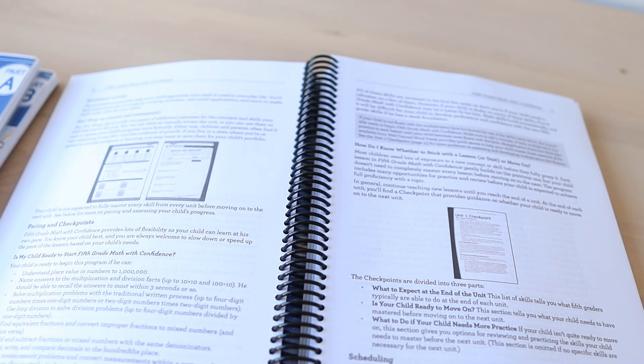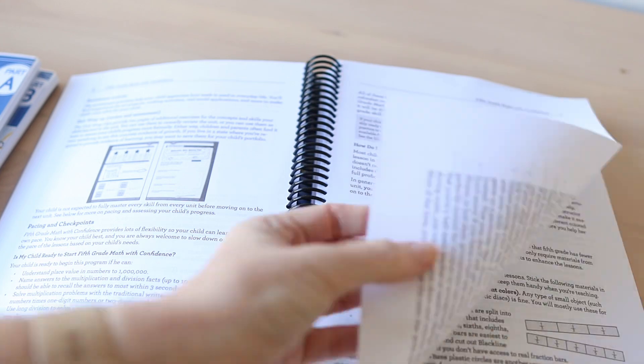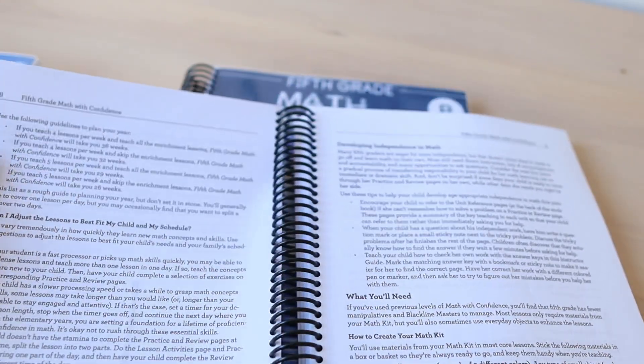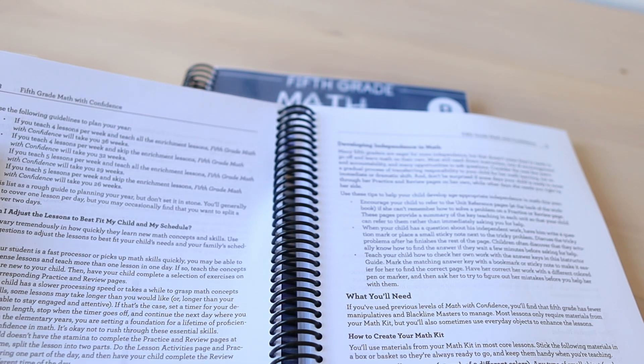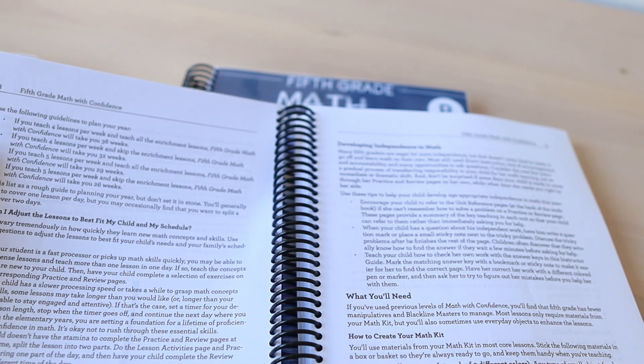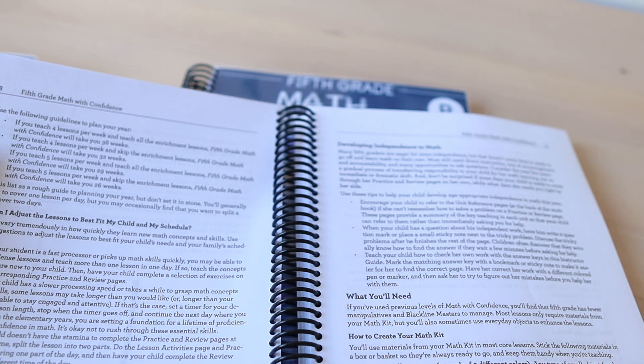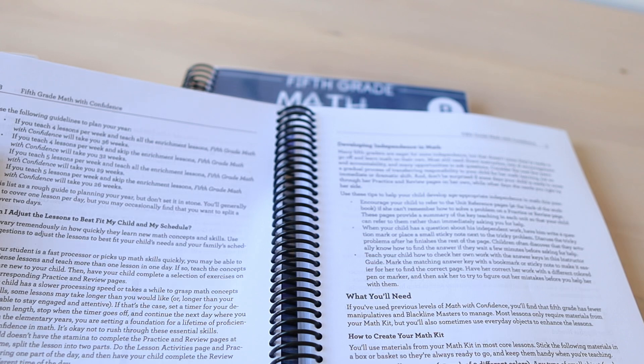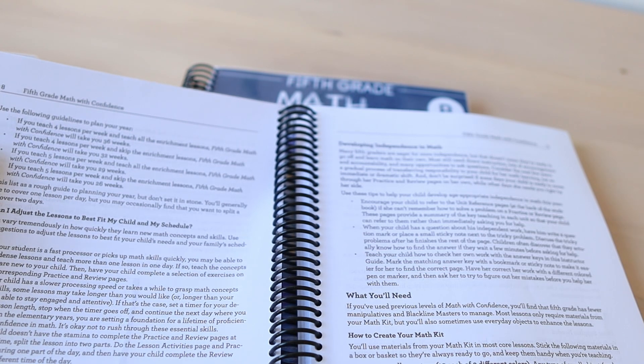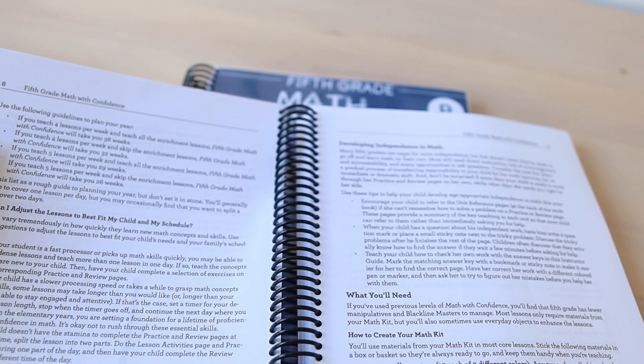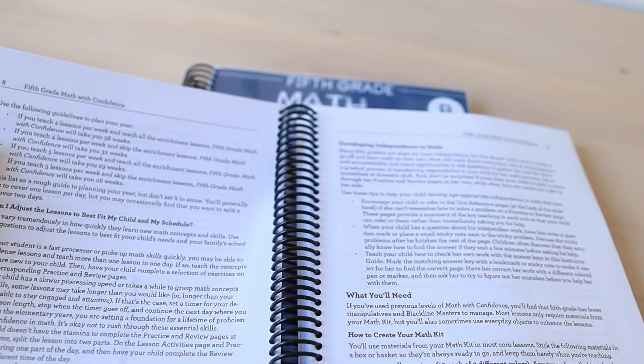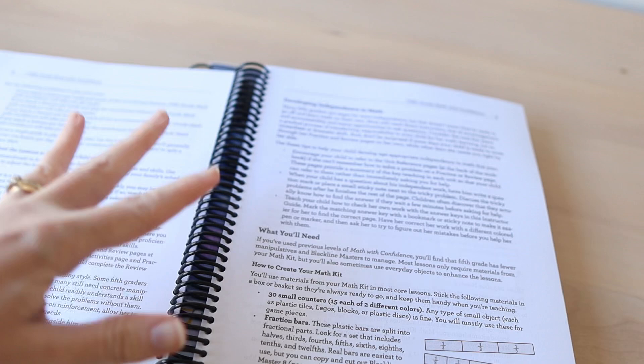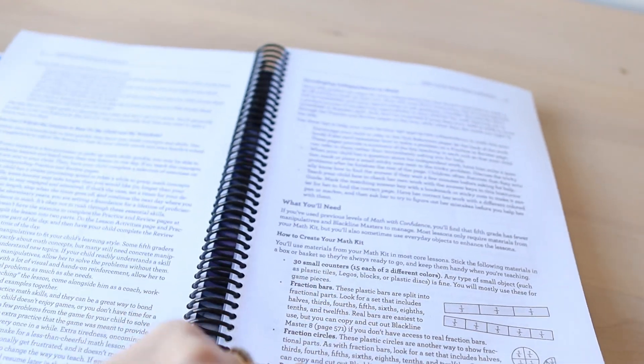You can adjust that. You can do it five days a week or four days a week. If you teach four lessons a week and all the enrichment lessons it'll take you 36 weeks. If you teach four lessons a week and skip the enrichment lessons it will take you 32 weeks. If you teach five lessons per week and teach all the enrichment lessons it'll take you 29 weeks. And if you do five lessons per week and skip the enrichment lessons it'll take you 26 weeks. So very flexible.